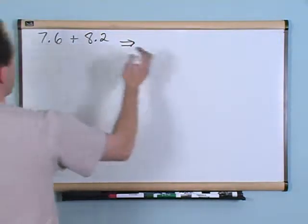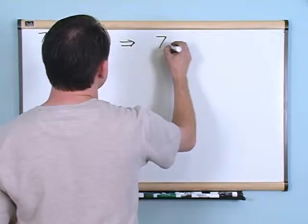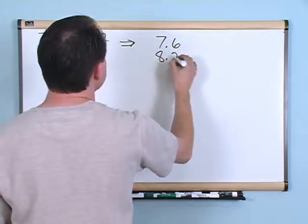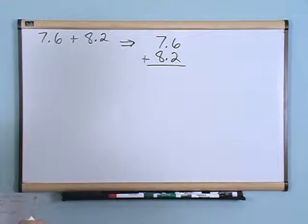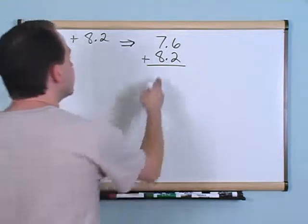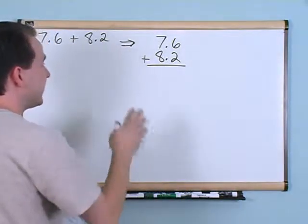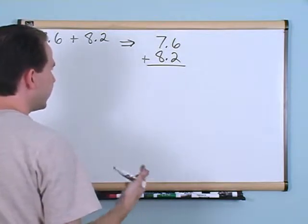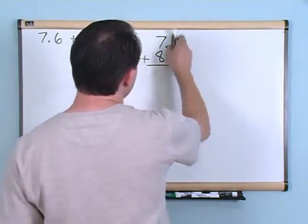You're going to do the same thing you always do — line these numbers up on top of each other and keep your decimal points in place. What you want to do is line the decimal points up one on top of the other. So you write the numbers on top of each other and line your decimals up.